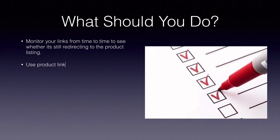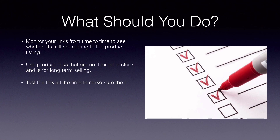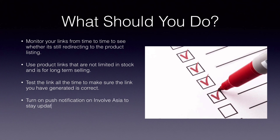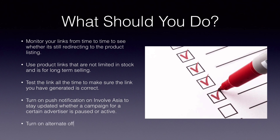Use product links that are not limited in stock and are for long-term selling. Test the link all the time to make sure the link you have generated is correct. Turn on push notifications on InvolveAsia to stay updated whether a campaign for a certain advertiser is paused or active. Turn on alternate offer redirection.